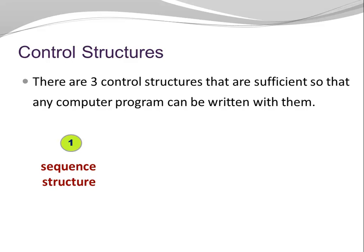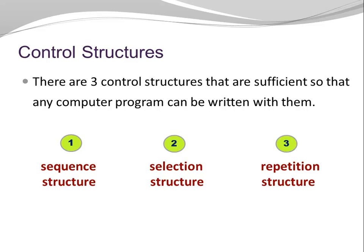The three control structures are: the sequence structure, which is the sequential execution of statements one after the other as specified in the code; the selection structure, which allows us to choose a path depending on a given condition; and the repetition structure, where we can execute a number of code statements over and over again, or maybe zero times, depending on a condition.